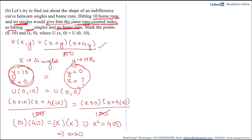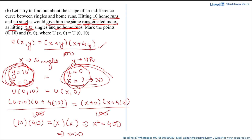Since x represents singles and can only be positive, x equals 20. So hitting 10 home runs and no singles gives the same runs created index as hitting 20 singles and no home runs. Both combinations yield the same level of utility.